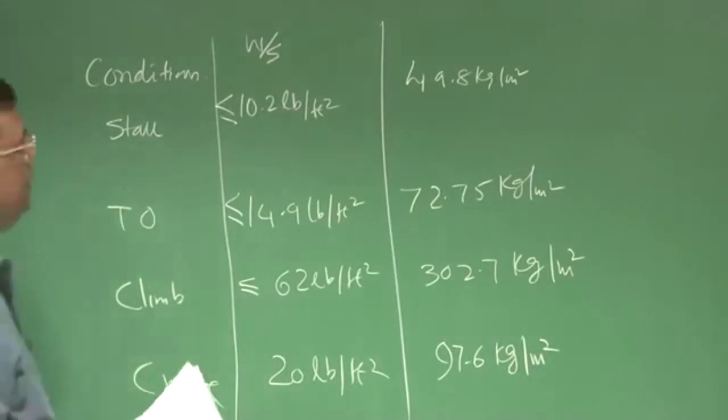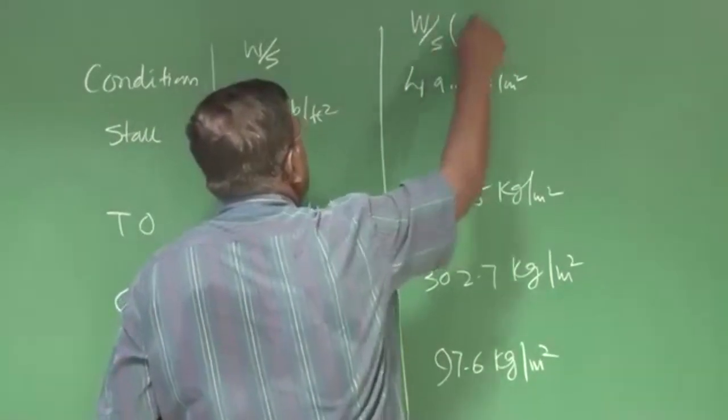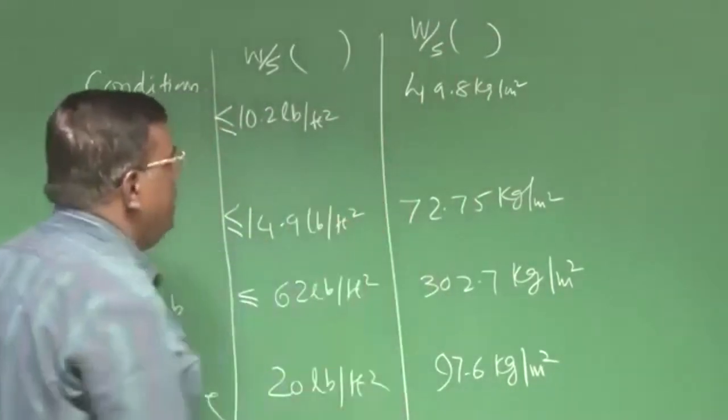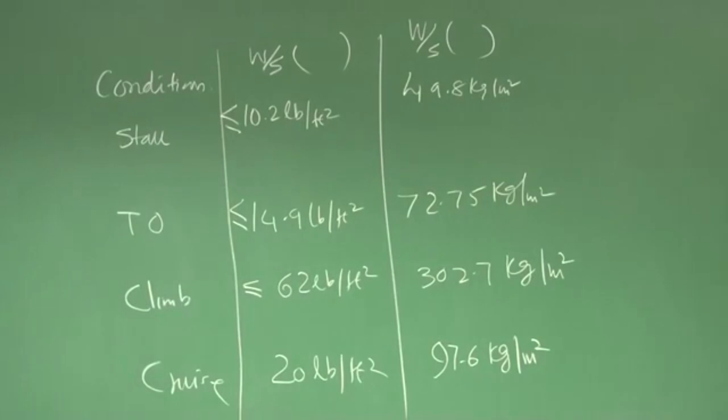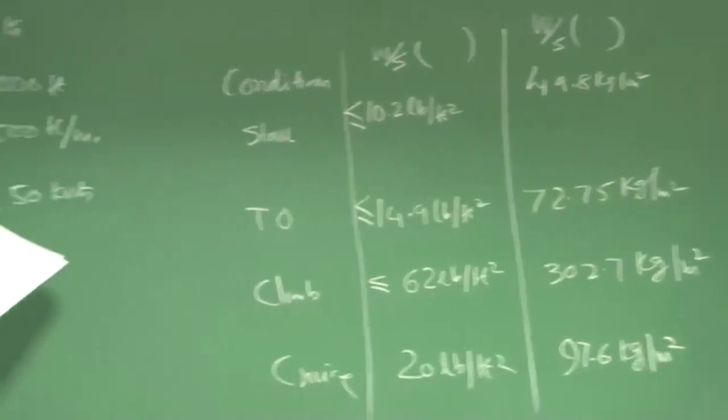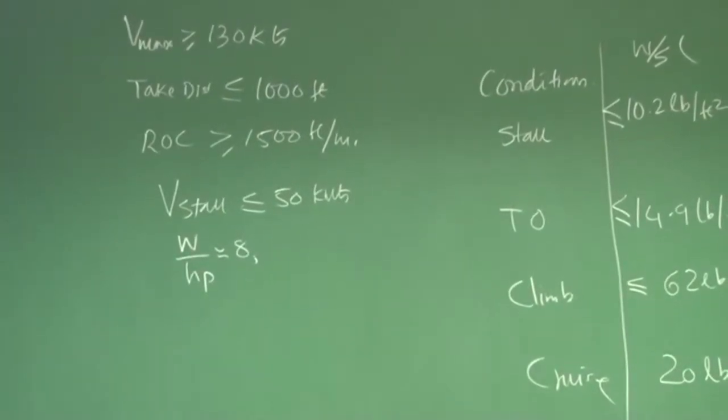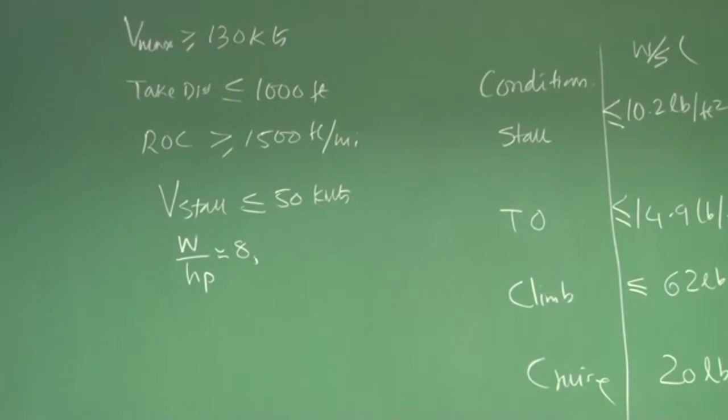Now, you could see that so many values of wing loading we need to have to satisfy the mission requirements, which are in terms of stall which cannot be more than 50 knots, takeoff which cannot be more than 1000 feet.